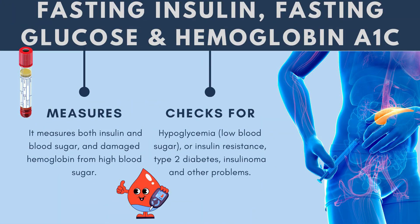The next group of tests includes fasting insulin, fasting glucose, and hemoglobin A1c — three tests that go together and measure how efficiently your body burns sugars. If that efficiency is low, you can develop insulin resistance, which causes a million diseases in Americans. Our diet is high in refined carbohydrates and processed seed oils, which are major contributors to the epidemic of overweight, brain problems, cancer, diabetes, and heart disease.